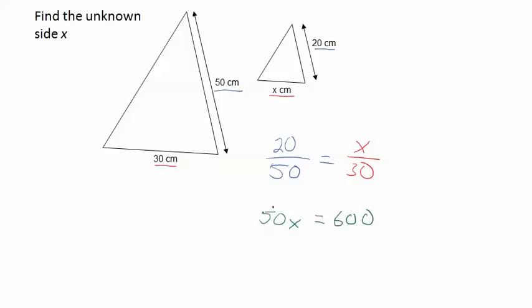Now we ask 50 times what is 600? We can find that by dividing by 50, and we find that X is 12 centimeters.